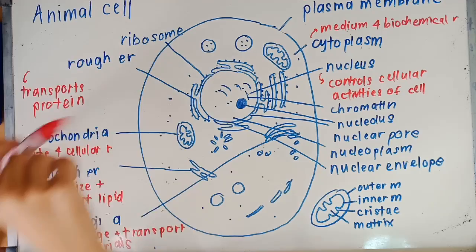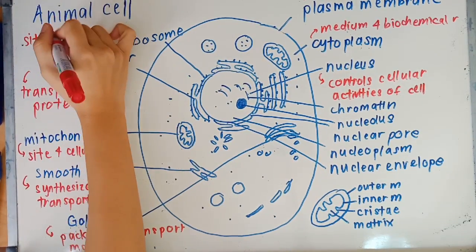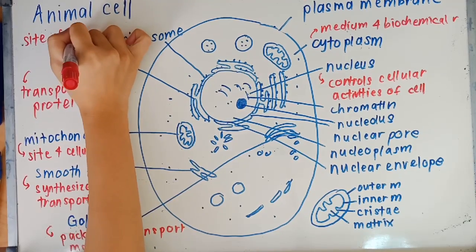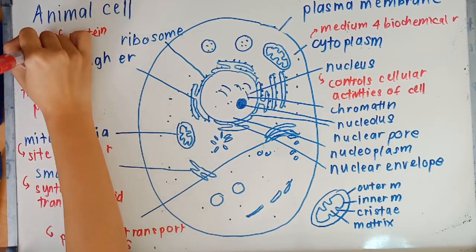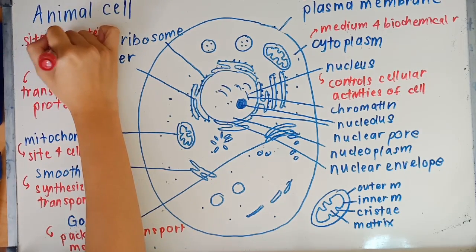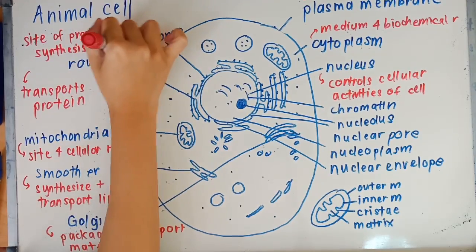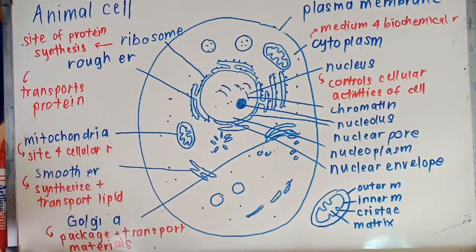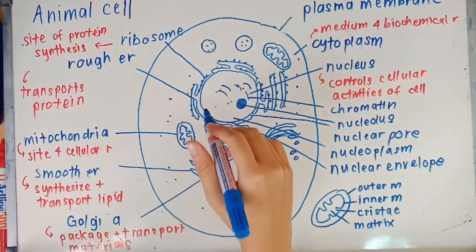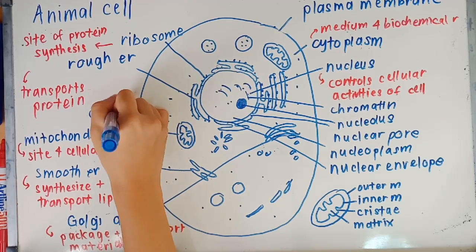Next thing that we have here is ribosome, which is simply the black dots that you can see on the rough ER. Ribosome is a spherical organelle. It can either be freely suspended in the cytoplasm or attached to rough ER, and the function of ribosome is to synthesize protein. This is why rough ER only transports protein, while smooth ER actually synthesizes and transports lipids, because ribosome is the one which will synthesize protein.